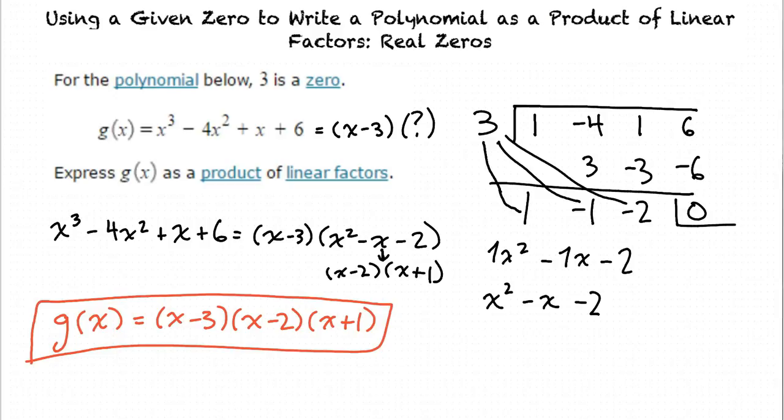So to do synthetic division, I write the coefficients of the original polynomial in descending order of powers of x inside the division sign, and then I write the given zero outside. I then follow the calculation process to find the quotient with the remainder of zero. That new quotient would be a corresponding factor of the polynomial that I can then simplify further, if need be, to find the final factors. Nicely said.